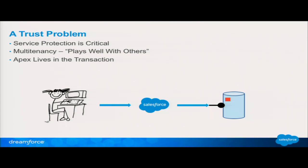Why does it need to be open? Because in that transaction, you might do a bunch of things: you might update an account, you might update some contacts, you might also create some junction objects, add a couple of tasks. When you're done, all of these things at once will either commit or roll back — they'll be there or vanish together. If the database connection vanishes, that will lose the ability to do that. So one transaction has to happen with the database connection open the whole time.